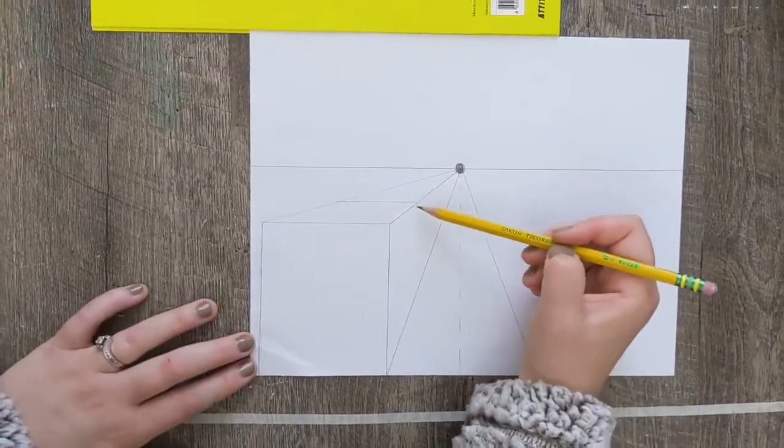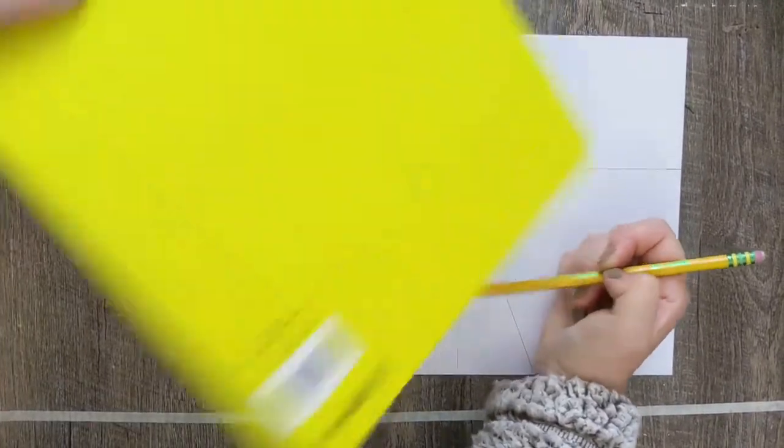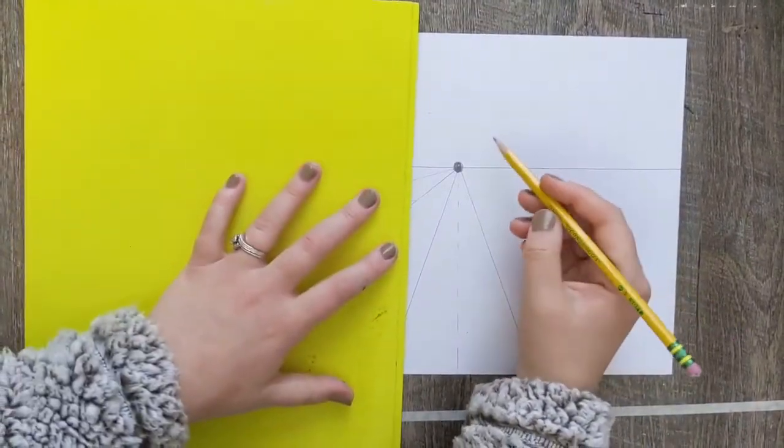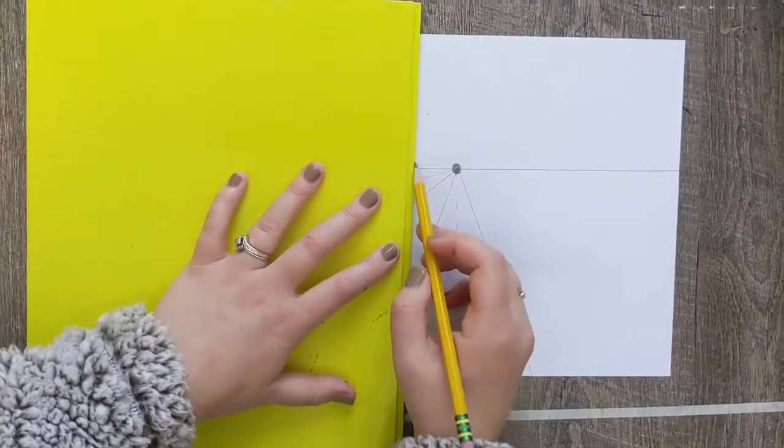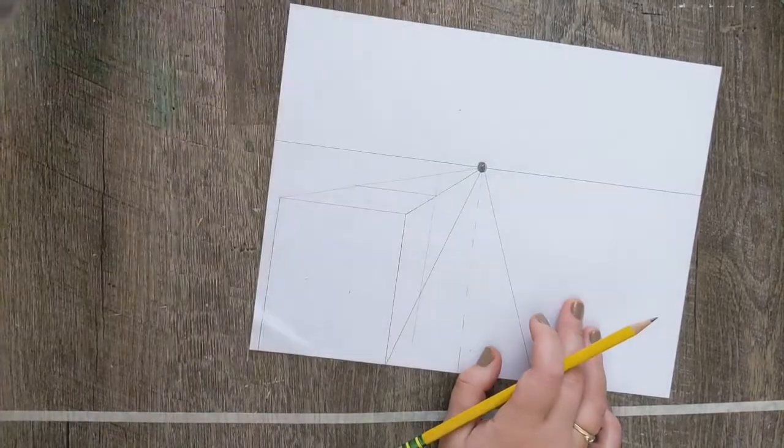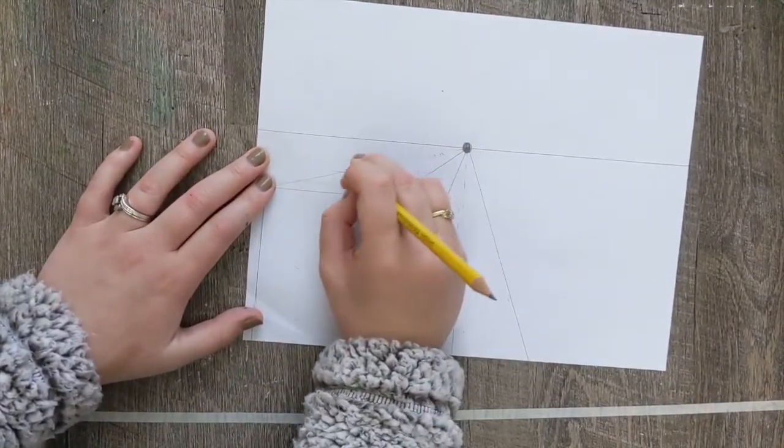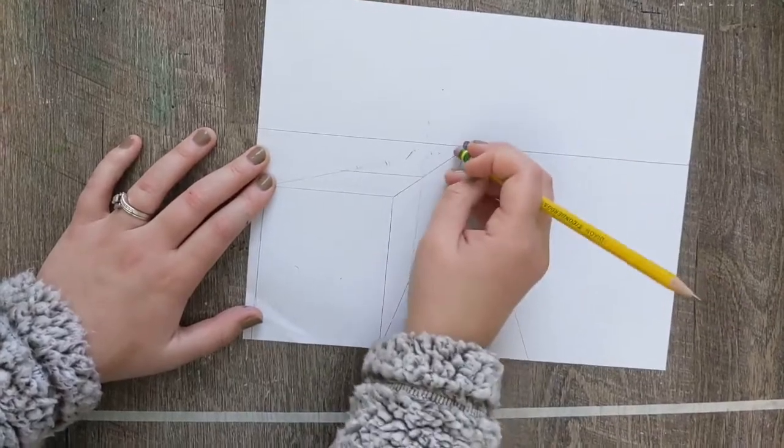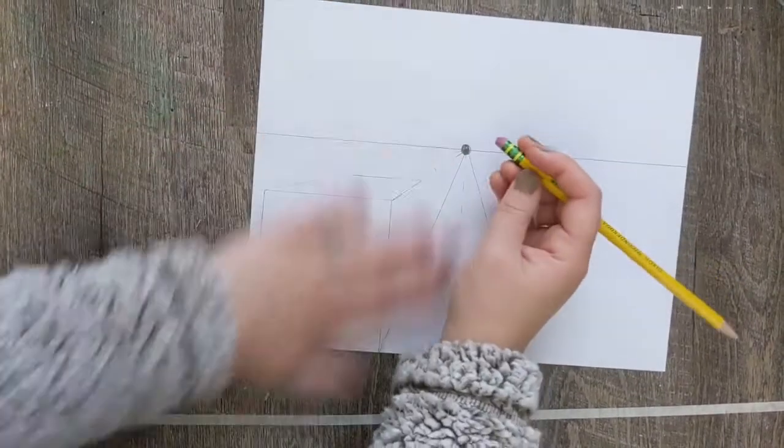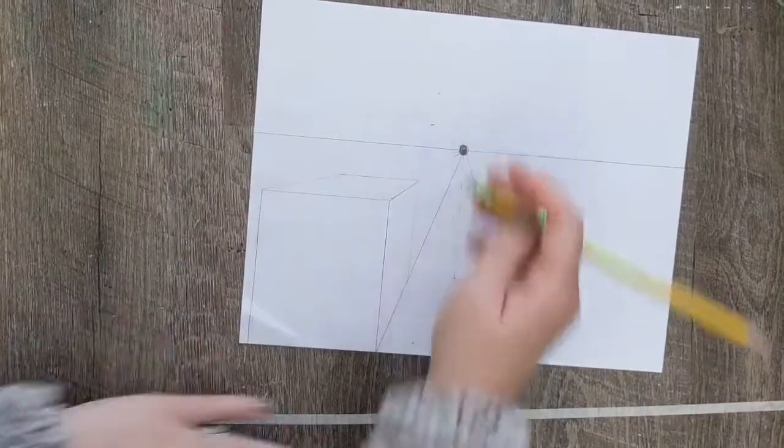Alright, so now we are going to look at that point we just made right there. And we are going to draw it down. Straight down. We want it to be parallel with the first rectangle that we made. And now, this is the fun part. We get to erase all these lines because we have just created a shape. Congratulations! It is your first perspective shape that you have drawn.